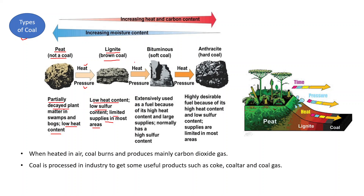Under further heat and pressure, lignite converts into bituminous, a soft coal. It is extensively used as a fuel due to its high heat content and large supplies, though it normally has high sulfur content. When bituminous undergoes heat and pressure, it converts into anthracite, a hard coal. Anthracite is a highly desirable fuel due to its high heat content and low sulfur content, though its supply is limited. The diagram shows this progression from peat to lignite, then to bituminous and anthracite.